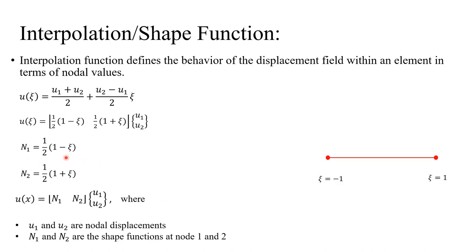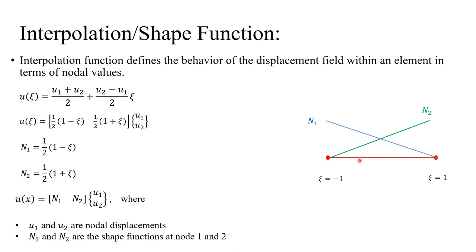Plotting the shape functions: at ξ = -1, N1 = (1 - (-1))/2 = 1, and at ξ = 1, N1 = 0. For N2, at ξ = -1 it is 0, and at ξ = 1 it is 1. From this simple example we can identify key properties of shape functions. Because we have two nodes, we have two shape functions. Each shape function equals 1 at its own node and 0 at any other node. The sum of all shape functions equals 1 everywhere within the element.